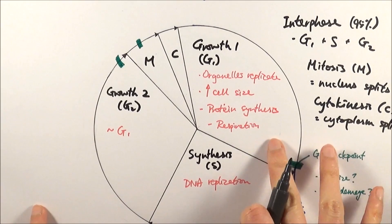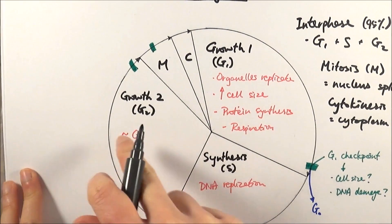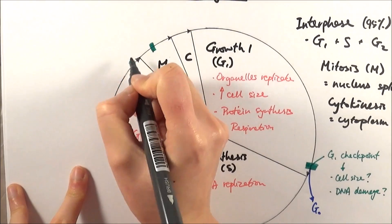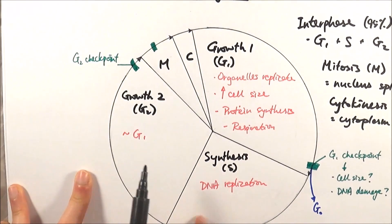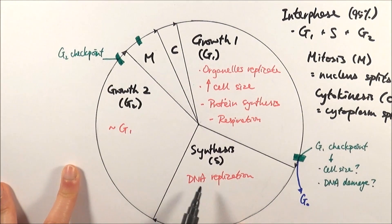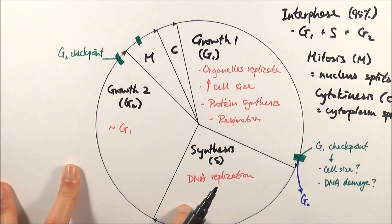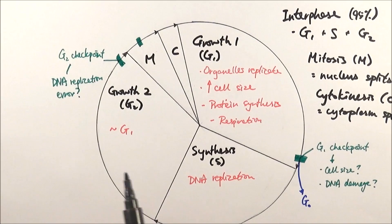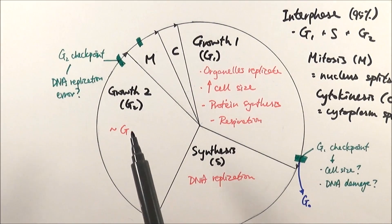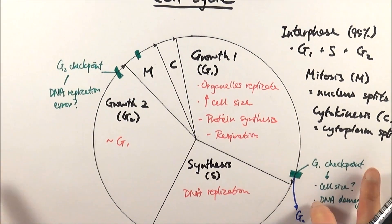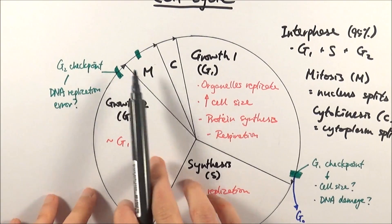At G2 you've got the G2 checkpoint. The G2 checkpoint really focuses on checking if there are any DNA damage or DNA replication errors after the synthesis phase, but also checks for all the other stuff which happens here as well—cell size, protein synthesis, etc. If they don't detect any of those problems, then they go into mitosis.